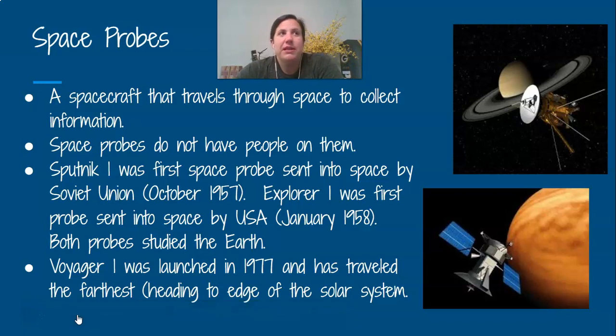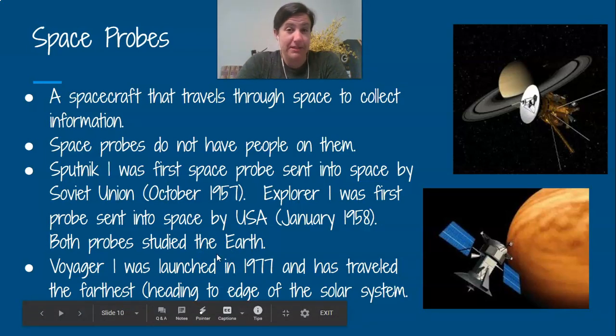Then we have something called Space Probe. So this is going to be a spacecraft that is not manned by humans. So it's simply sent out into space to collect information, but no humans are on it. So Sputnik 1, there was a big space race between us and the former Soviet Union. But Sputnik 1 was the first space probe launched into space by the former Soviet Union back in October of 1957. And then we launched, we meaning the United States, launched Explorer 1 in January of 1958. And both of those probes were just sent into space to study Earth.